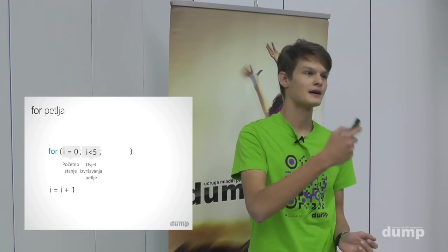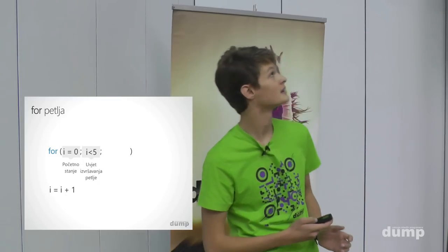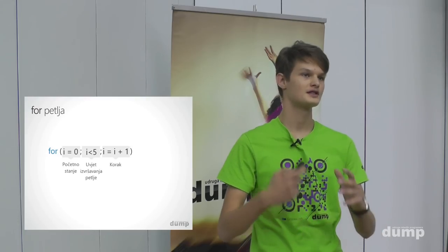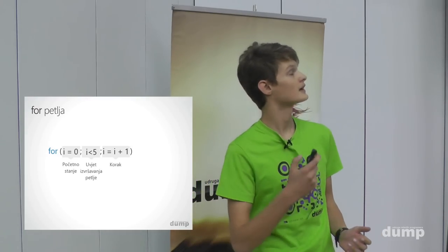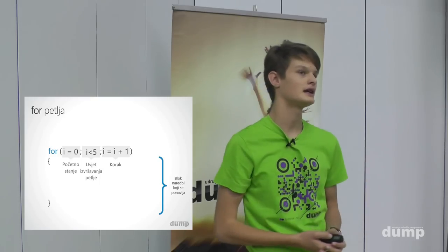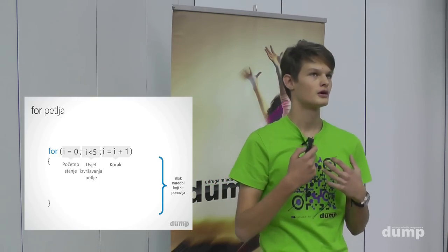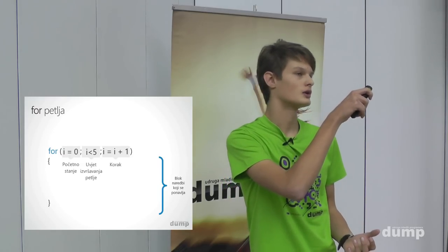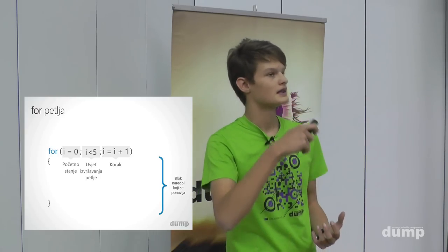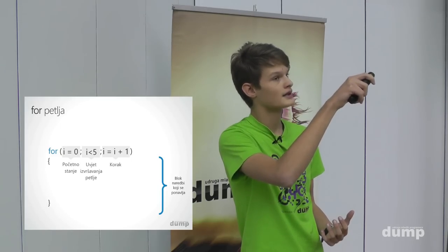Petlja se izvršava sve dok je uvjet istinit. Primjerice, 5 nije manje od 5 pa se petlja prestaje izvršavati. Na kraju dolazi korak — broj za koji ćemo uvećati naše stanje. For petlja se može pročitati: za i jednako 0, sve dok je i manji od 5, izvrši blok naredbi i nakon svakog izvršavanja uvećaj stanje za 1.